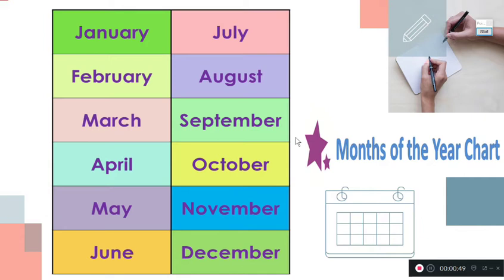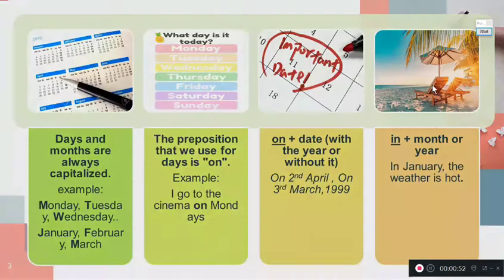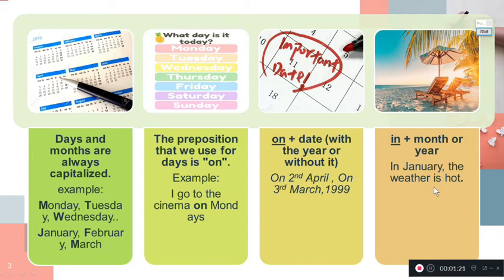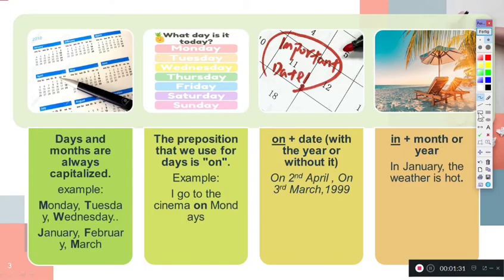Now we have to remember something. Since we use time expressions, we need to use prepositions of time. In this case, we are going to focus on how to use 'on' and 'in.' Every time we introduce a time expression in a sentence, it is necessary to work with a preposition of time. We are going to check 'on' and 'in.'